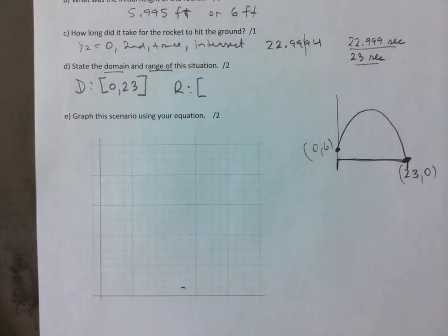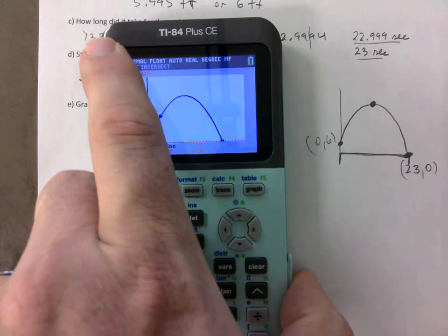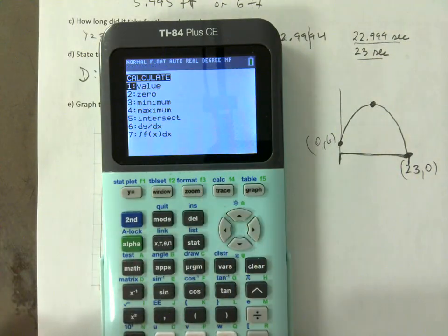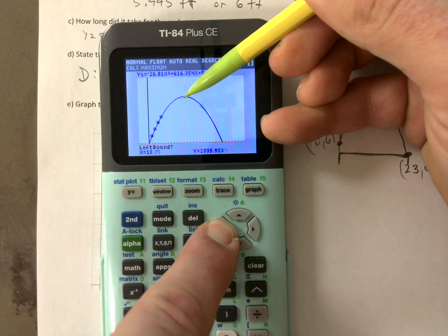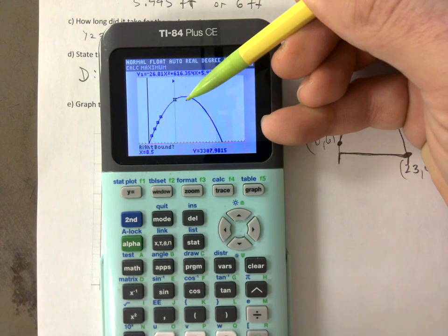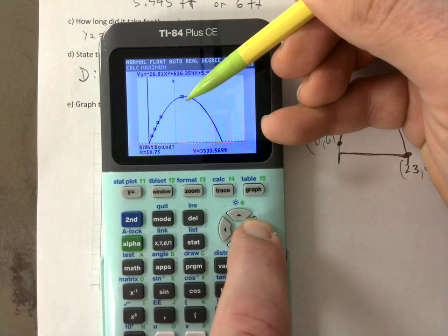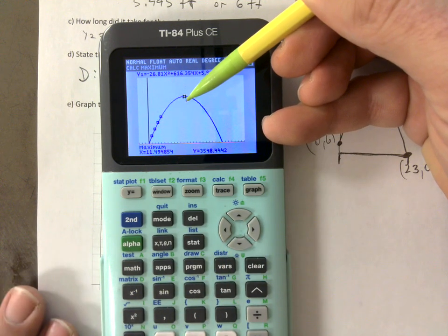For the range, what do I need? The max, the vertex. You need the vertex for it. So I need to figure this out. I'm going to go second trace maximum. This is the vertex. You need to go to the left. Just think of Beyonce's song, to the left, to the left. That's always how you start. And then right Beyonce.